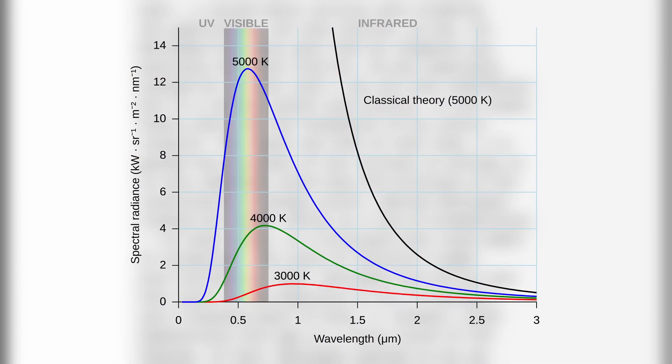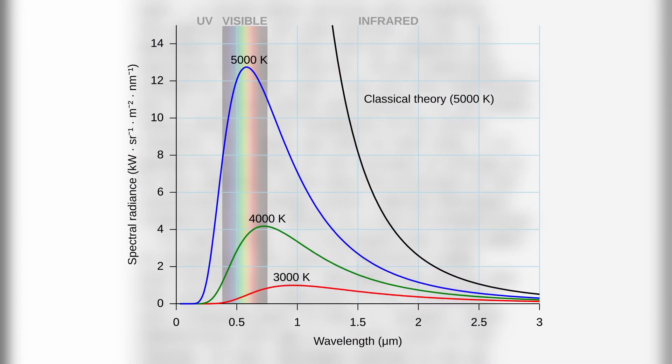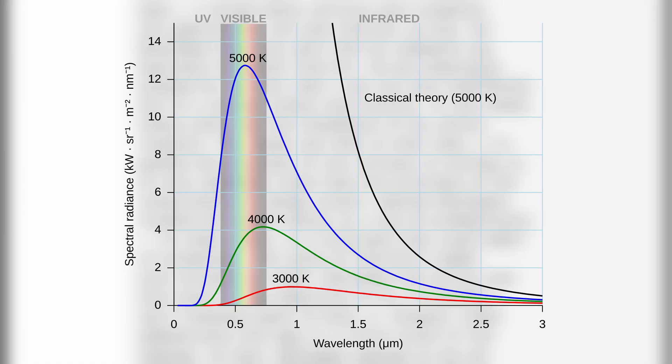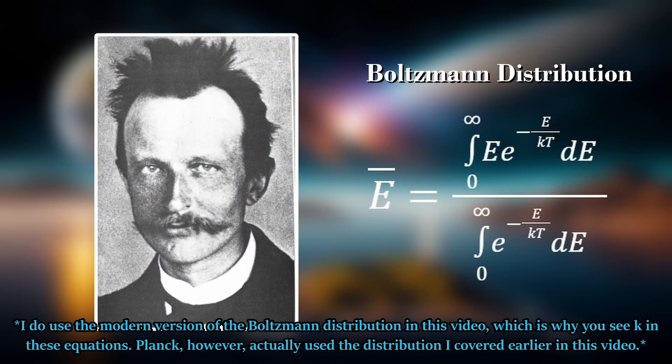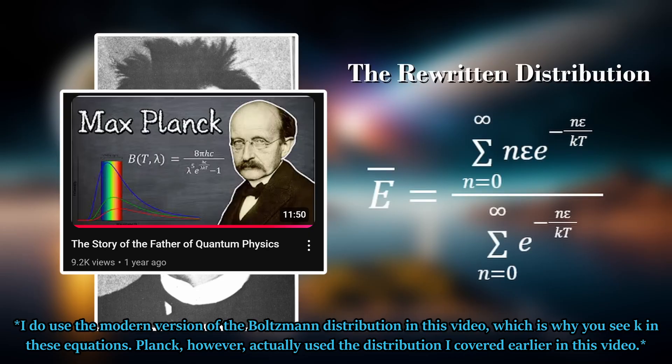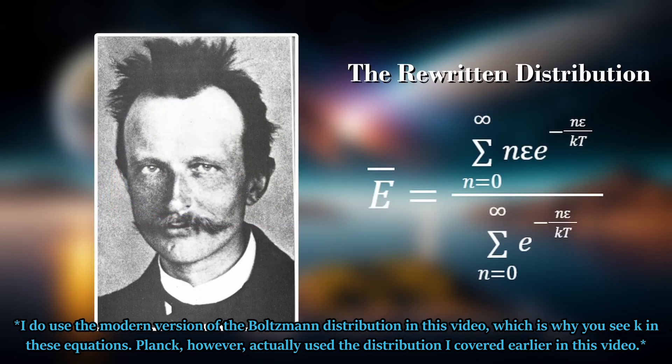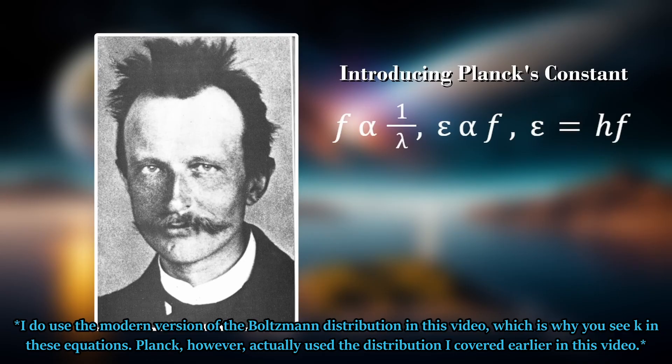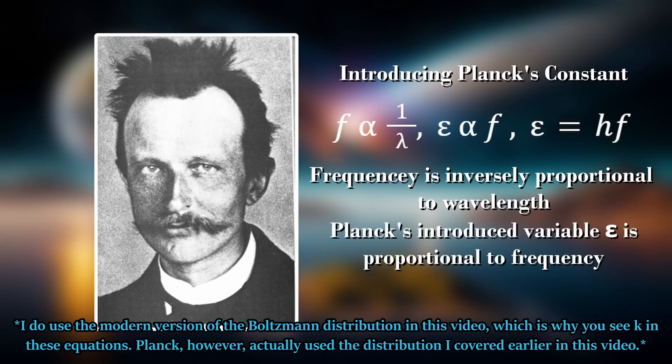However, his famous work on blackbody radiation and the ultraviolet catastrophe in 1900 ultimately changed his mind. I won't go too much into detail on this specific work, as I have covered it in this video here, which I will link in the description. But in a so-called act of desperation, Max used Boltzmann's probability method to derive his equation modeling blackbody radiation, which introduced Planck's constant and birthed quantum physics.